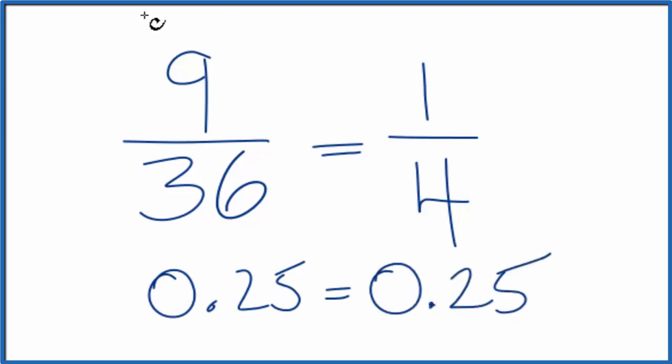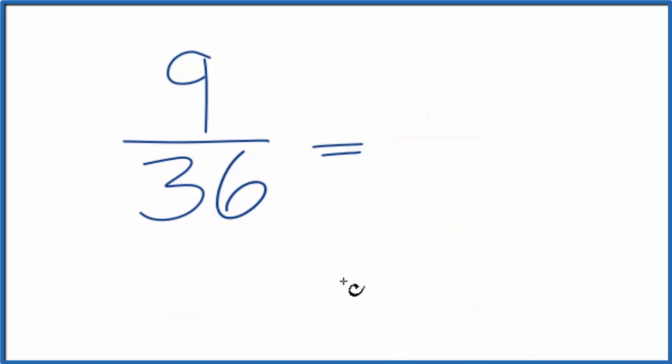So they're the same value here, but they're written differently, different numerator and denominator. They're equivalent fractions. There's another way we could do this. You could divide 9 by 3 and 36 by 3.